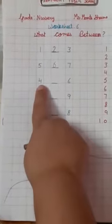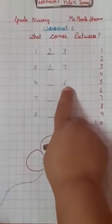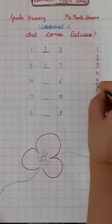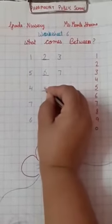What is this? 4. And what is this? 6. Now see, what comes between 4 and 6? 5. Write here, 5.